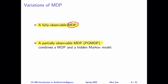In a fully observable MDP, we assume each state is fully observable. In other words, the agent knows what state it is currently in. In a POMDP, on the other hand, the agent does not know what state it is currently in, but it can get some noisy signal of the current state.